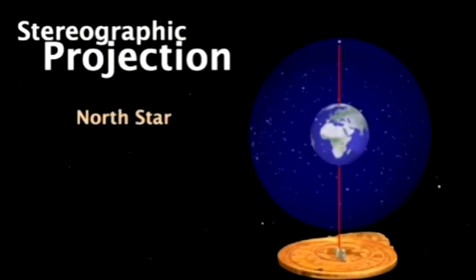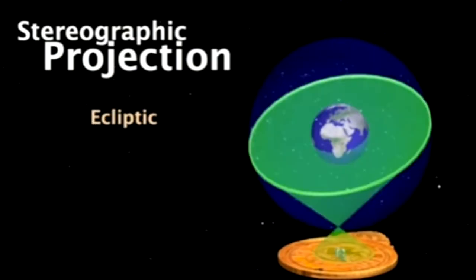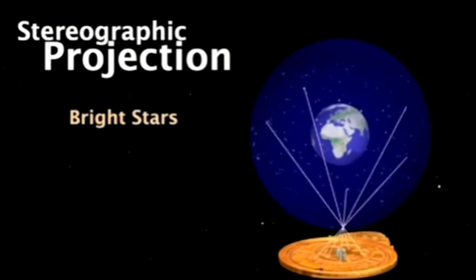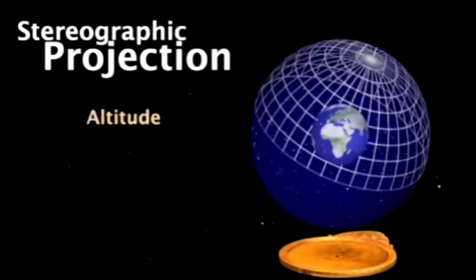The idea is actually relatively simple. Imagine that the Earth is at the centre of the universe, and surrounding it is the sky projected onto a sphere. Each point on the surface of the sphere is mapped through the bottom pole onto a flat surface where it's recorded. The north star corresponds to the centre of the device. The ecliptic — the path of the sun, moon, and planets — corresponds to an offset circle. The bright stars correspond to little daggers on the rete, and the altitude corresponds to the plate system.